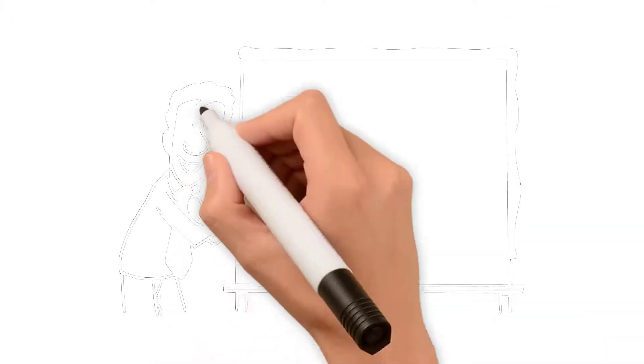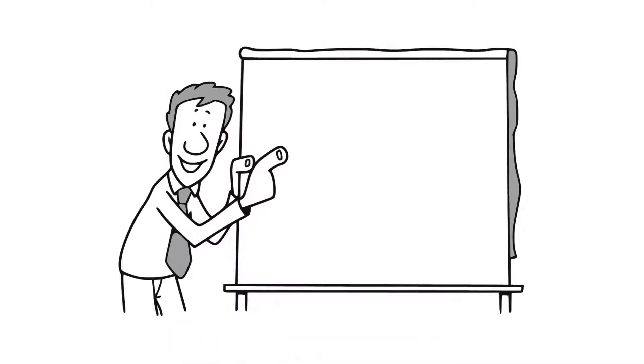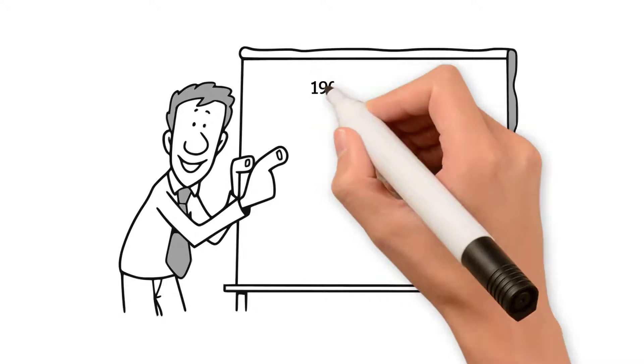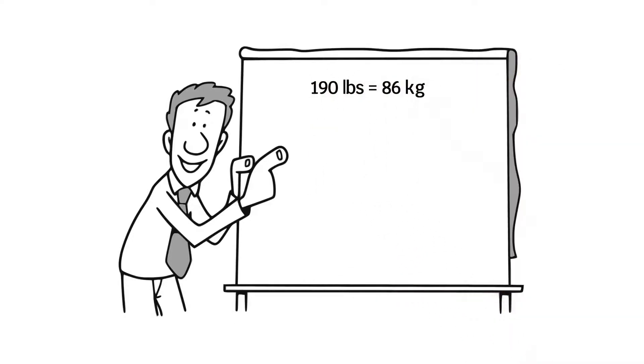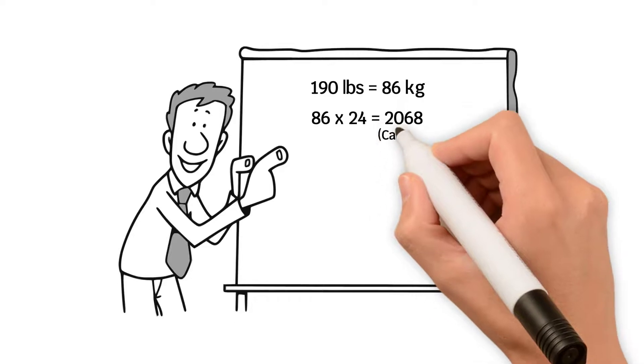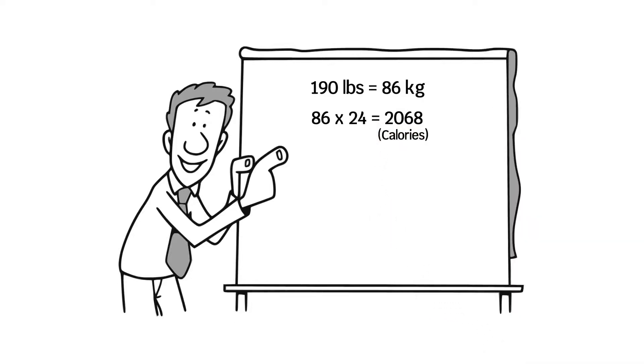Another real basic equation is multiplying your weight in kilograms by 24. Using the same weight, 190 pounds, which is 86 kilograms by 24, is 2068 calories. It's not as accurate as other equations, but all will vary slightly.